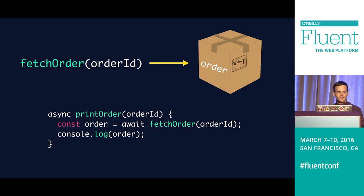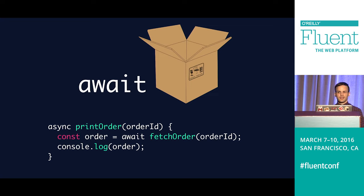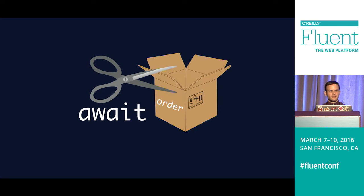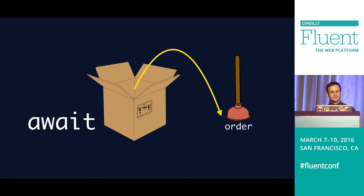Pictorially, think of fetch order returning a box that contains the order — a promise wrapping an eventual value. When we await this box, first we treat it like an open box: the value hasn't been fulfilled yet, so we wait in a non-blocking fashion. Eventually the value is fulfilled and in the box. Then await essentially takes scissors, cuts open the box, pulls open the flaps, and pulls the order out — retrieving the fulfilled value and allowing us to use it like an expression.